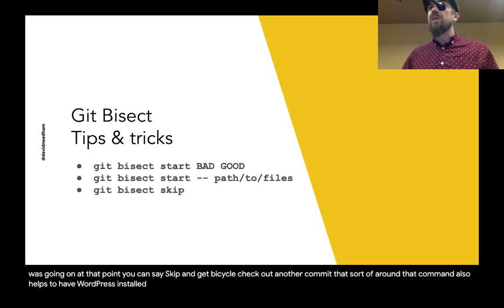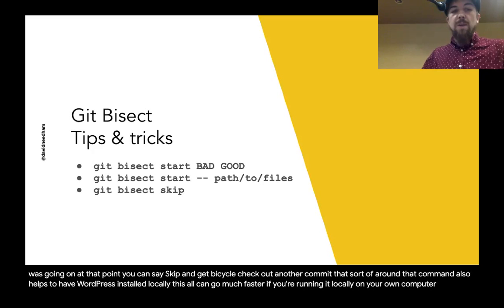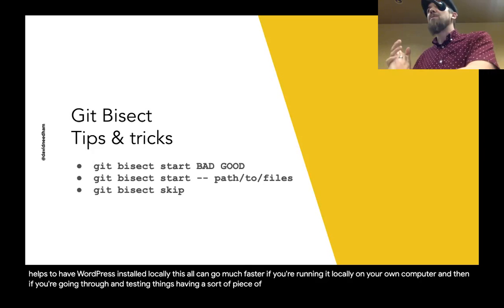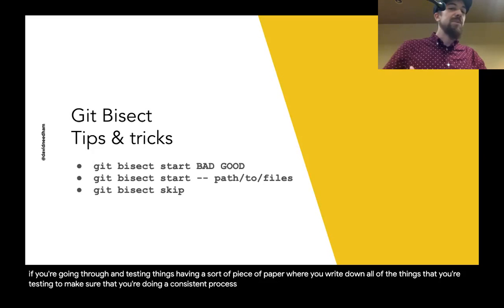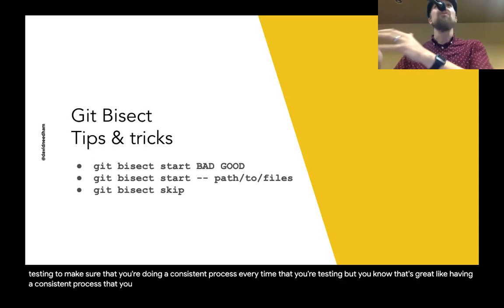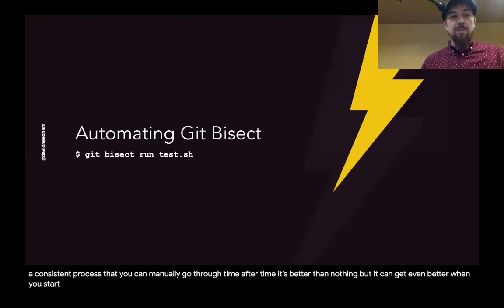Of course, it also helps to have WordPress installed locally — this can go much faster if you're running it locally on your own computer. Having a piece of paper where you write down all the things you're testing helps ensure a consistent process every time. But having a consistent manual process is better than nothing, and it can get even better when you start automating.